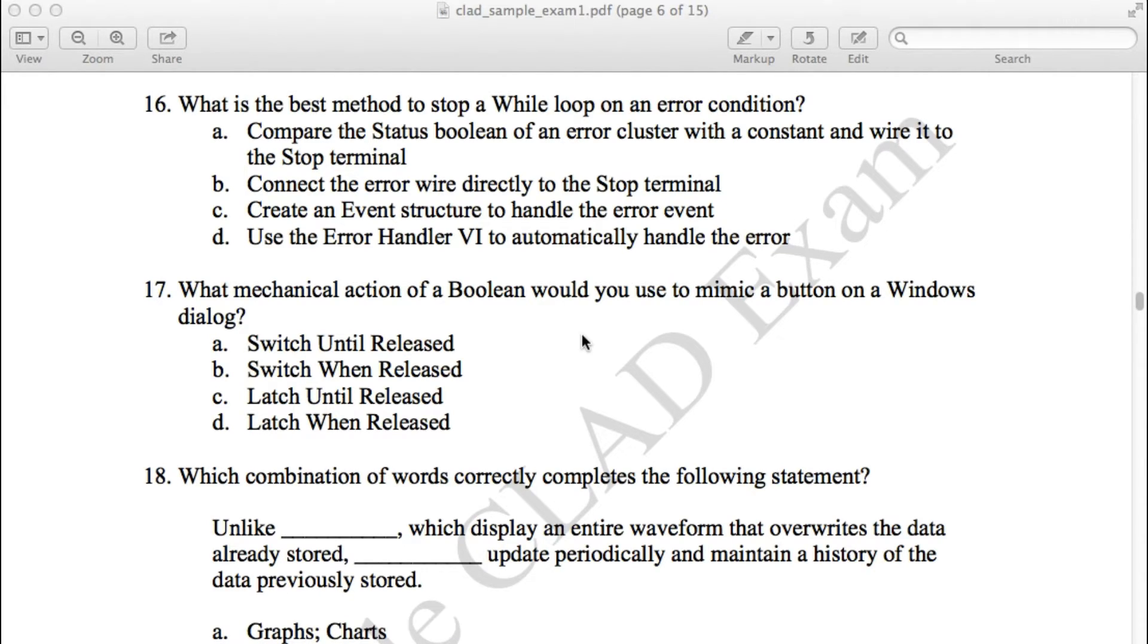D is use the error handler VI to automatically handle the error. This is incorrect because by using the error handler VI we're actually manually handling errors rather than automatically. So the answer is B.